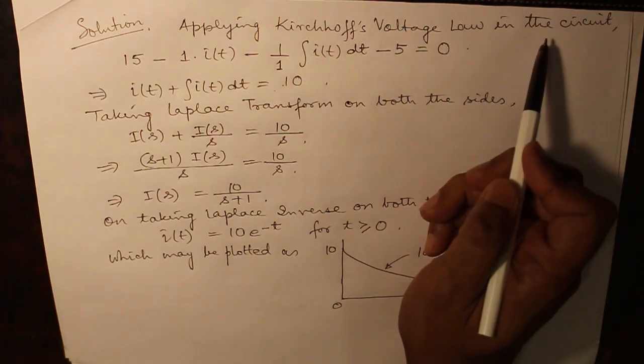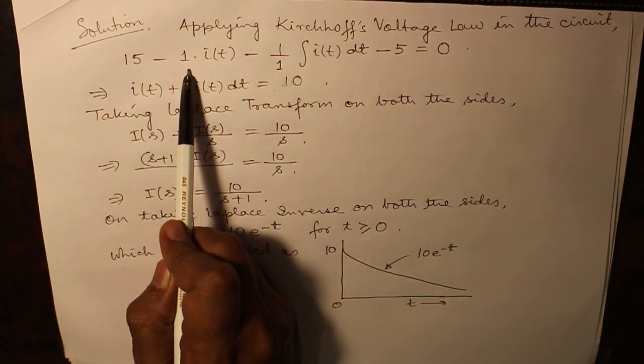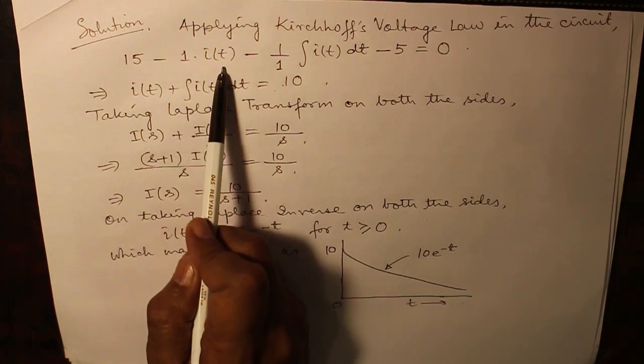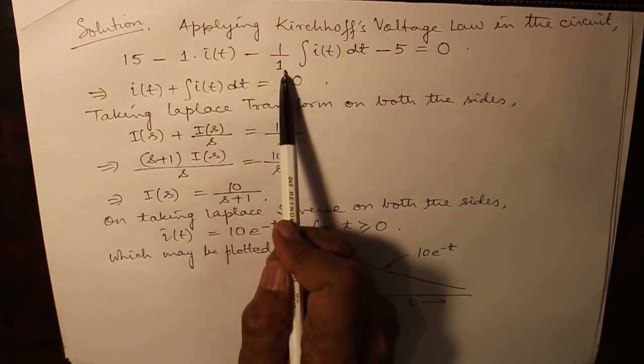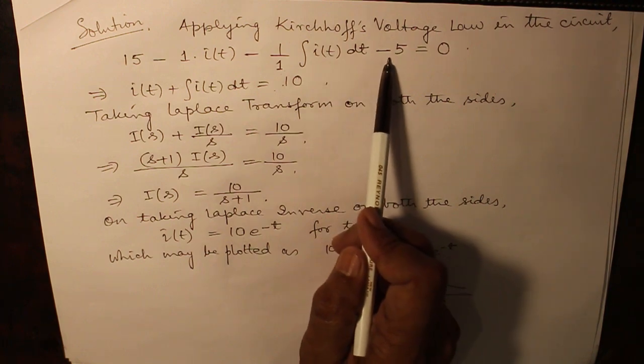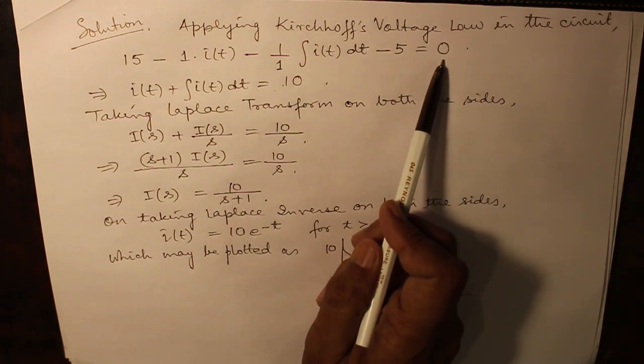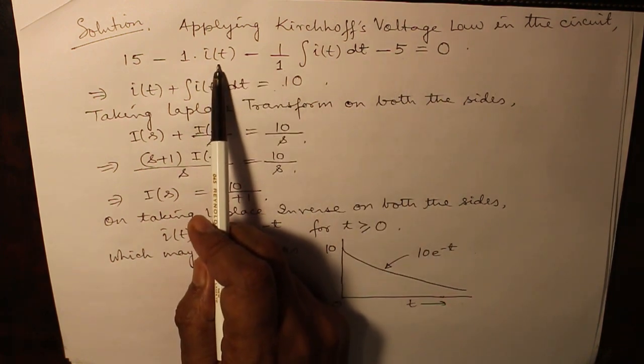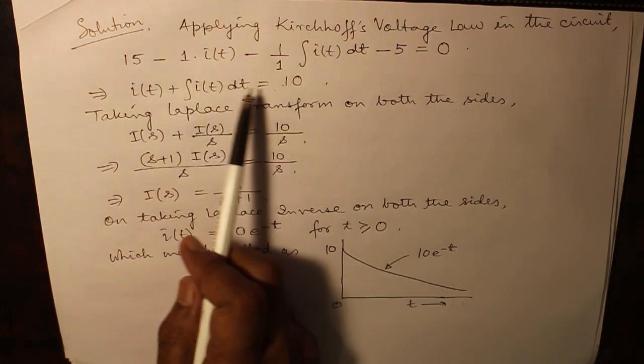Applying Kirchhoff's voltage law in the circuit: voltage 15 minus i(t) times 1 (i(t), R was 1) minus 1 over C which is also 1, integral i(t) dt minus 5 which is the initial condition which comes because of the capacitor voltage in opposition equals zero. So, that gives you i(t) plus integral of i(t) dt equals 10.